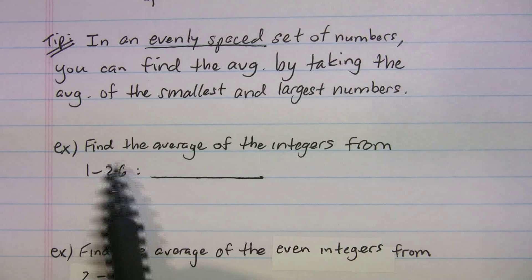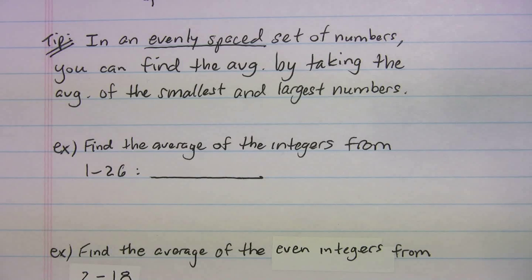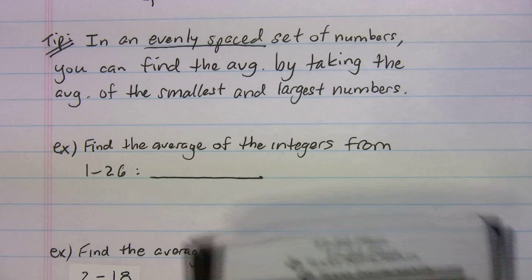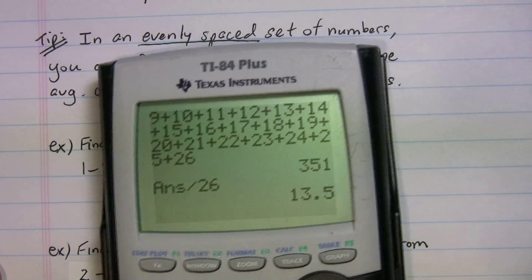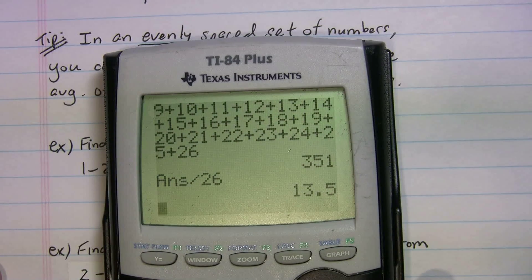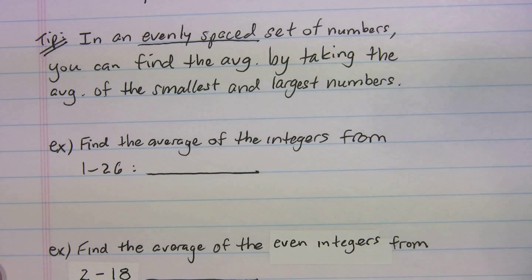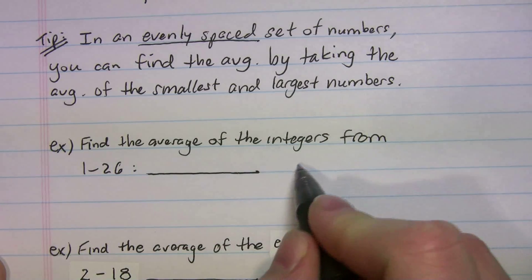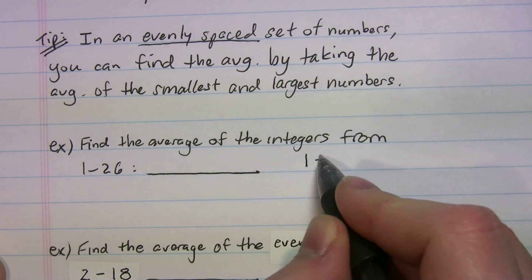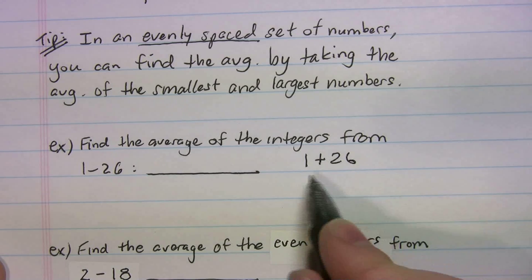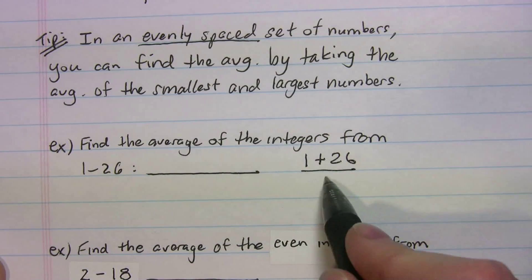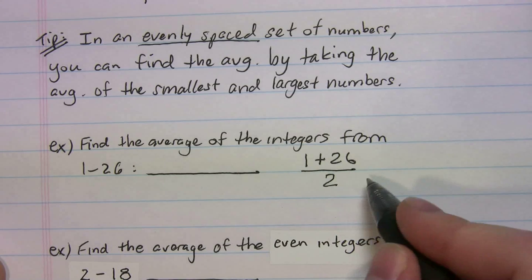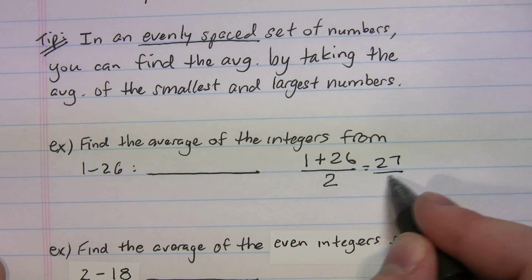Okay. So this says, find the average of the integers from 1 through 26. Now what you don't want to do if you got something like this on test day is end up doing 1 plus 2 plus 3 plus 4 plus 5 plus 6. You can do that and you'll get the question right. Let me just show you a shortcut. So all you're going to do, average the smallest and the largest. So that's going to be 1 plus 26, smallest and the largest, divided by how many numbers? 2.